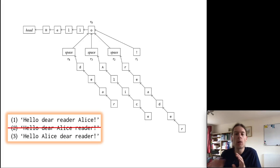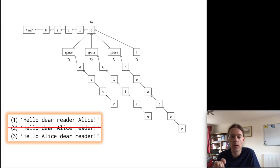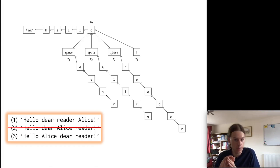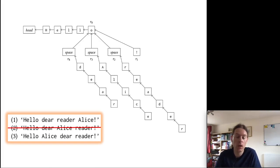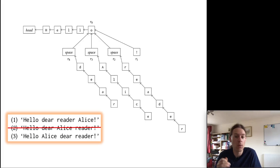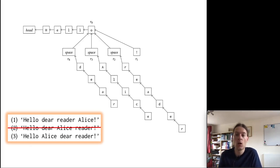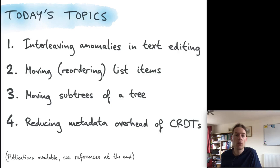We could still say we want to be strict and allow no interleaving at all. We did devise a modification to the RGA algorithm such that interleaving of concurrent insertions does not happen regardless of how the cursor was moved. There isn't time in this talk to cover this algorithm, but if you're interested, there's a paper we published in 2019 called 'Interleaving Anomalies in Collaborative Text Editors' which describes it exactly. Let's move on to the next topic.